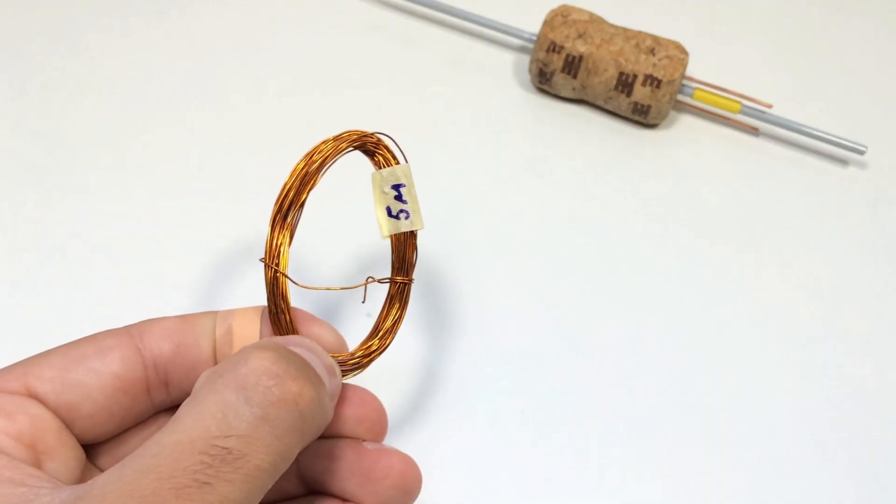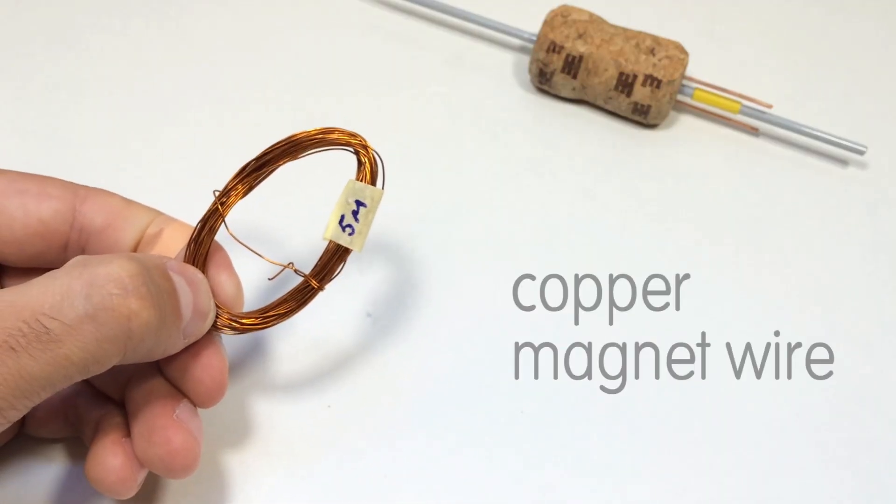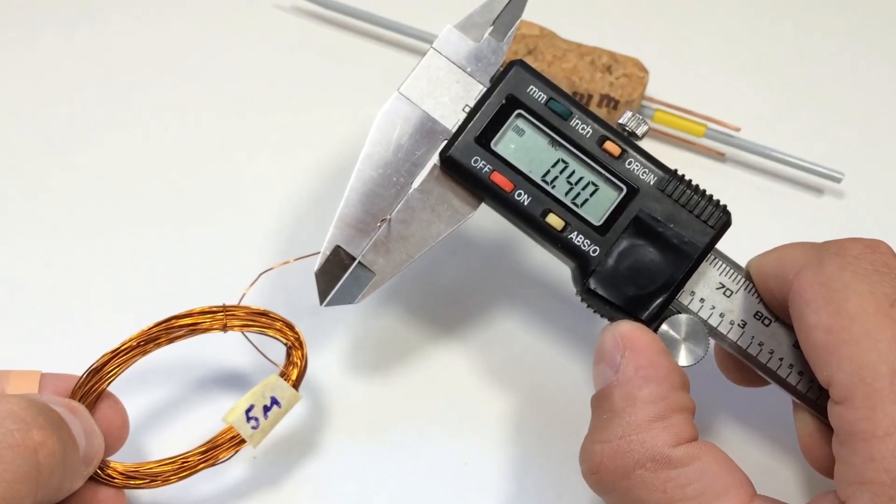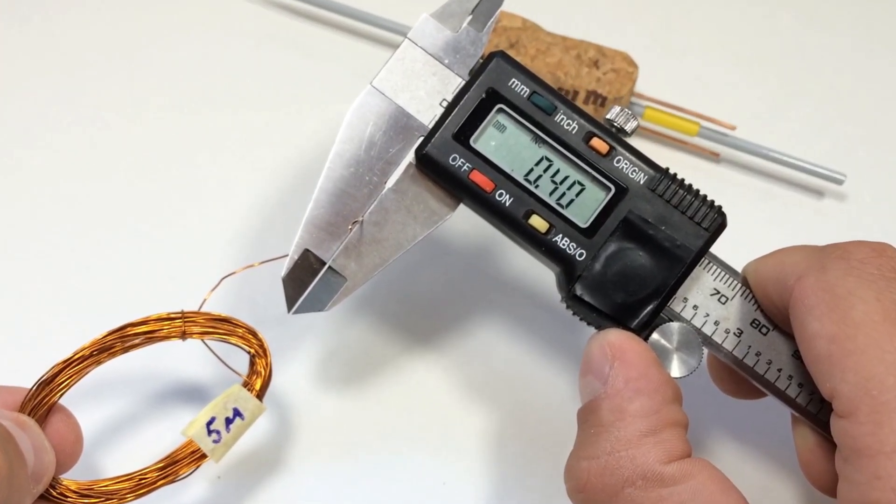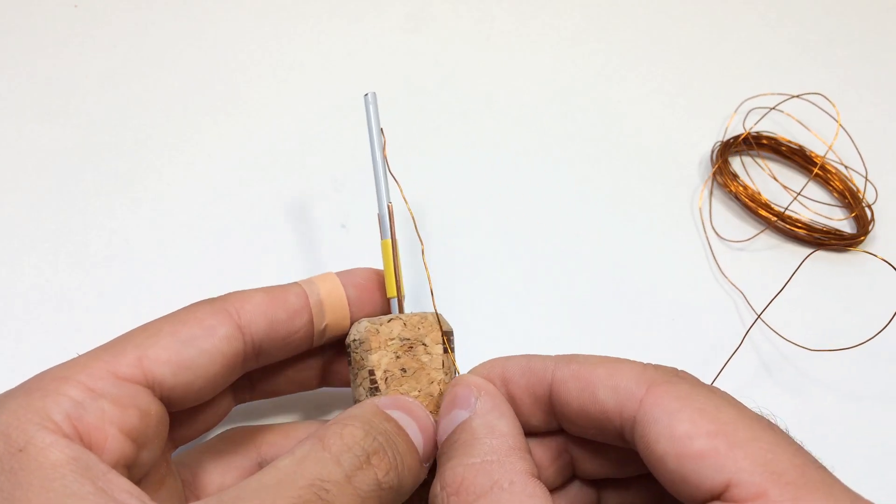Next we need a thin insulated copper wire. Personally, I used a length of 5 meters and a diameter of 4 tenths of a millimeter. We wind this wire in one direction on the motor rotor.